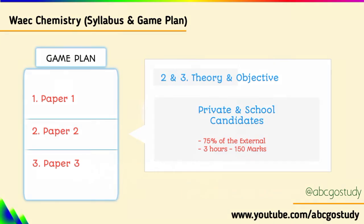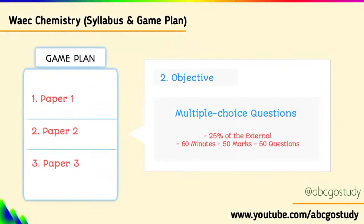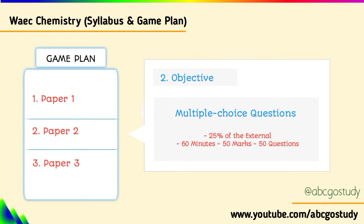If you divide Paper 2 into objective and theory: the objective section carries 50 questions for 50 marks, representing 25% of your total grade. Each question is worth 1 mark, amounting to approximately 0.5% of your total grade, to be completed in 60 minutes. For the theory aspect, you have Section A, Section B, and Section C.